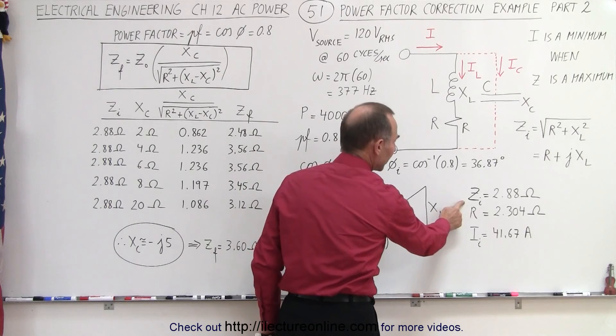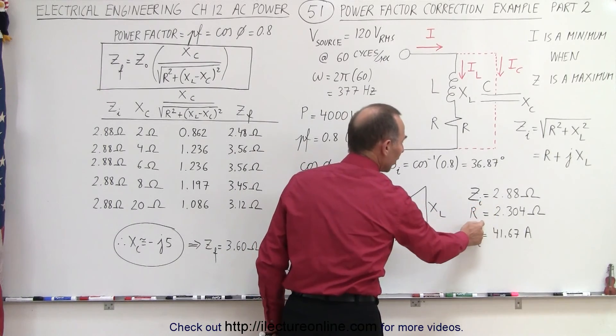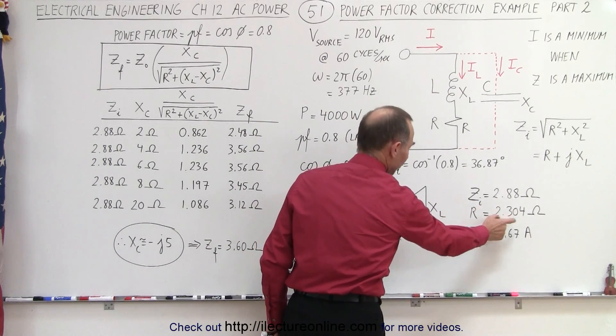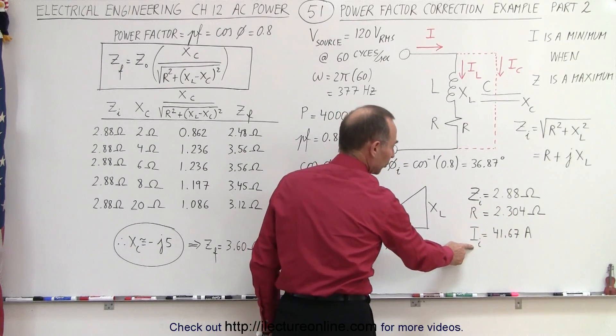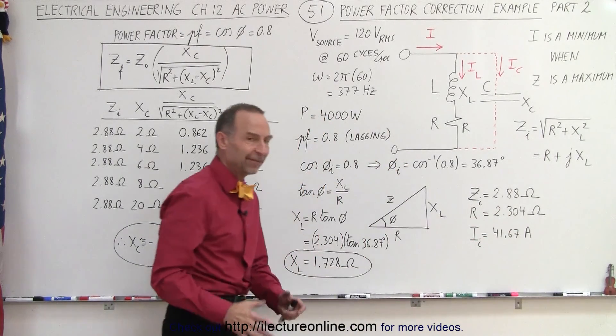parameters given, we had an initial impedance of 2.88 ohms, a resistance of 2.304 ohms (of course that won't change), and then the initial current of 41.67 amps.